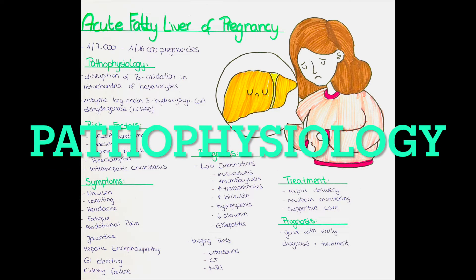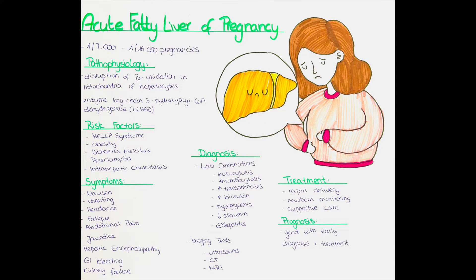What is the pathophysiology? Acute fatty liver of pregnancy is caused by disruption of beta-oxidation in the mitochondria of hepatocytes, leading to the accumulation of lipids in the cells. The exact pathophysiological mechanism is not fully understood. It is known that fetal defects in the enzyme long-chain 3-hydroxyacyl CoA dehydrogenase lead to a flooding of the maternal organism with fatty acids or their metabolites.